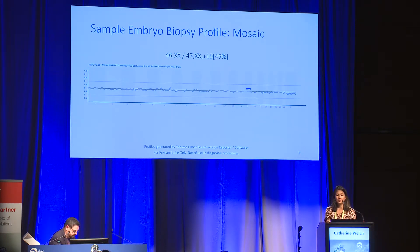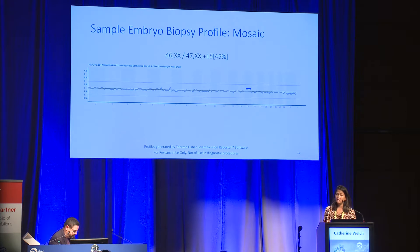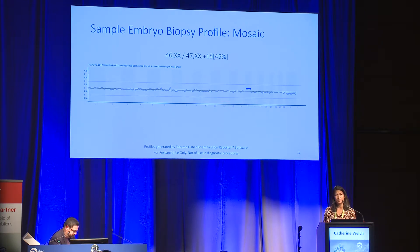Here's a sample embryo biopsy profile for a mosaic. You can see the 45% gain of chromosome 15. The software calls the copy number — for example, this profile is called 2.45 copies — and then we convert that to the percentage.